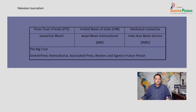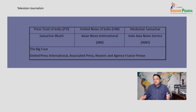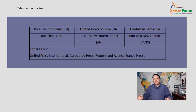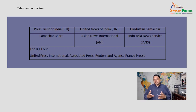Samachar Bharti was registered under the Companies Act in 1962. However, it took another 5 years before the agency began operations from 1st January 1967. Several newspapers were among its subscribers and the agency provided services in Hindi, Gujarati, Marathi, Tamil, Kannada, Urdu, Telugu, Malayalam, Bengali, Oriya and Punjabi. Samachar Bharti even had arrangements for exchange of news with the American UPI to bring world news to its newspaper clients.